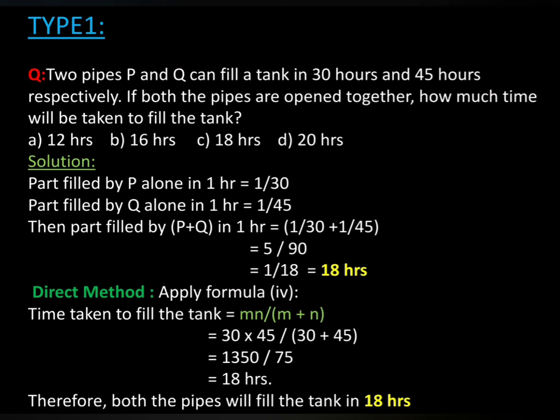Solution: Part filled by P alone in 1 hour is 1 by 30. Part filled by Q alone in 1 hour is 1 by 45. Then part filled by P plus Q in 1 hour is 1 by 30 plus 1 by 45, equals 5 by 90, equals 1 by 18. So 18 hours.